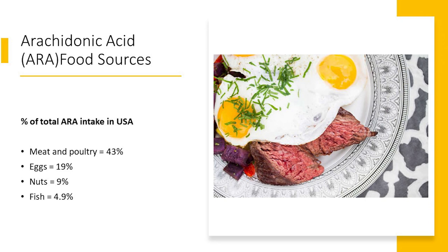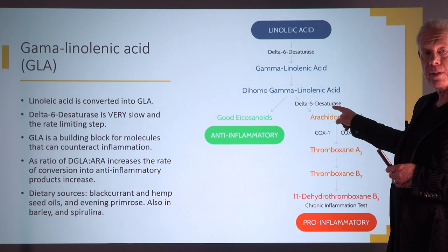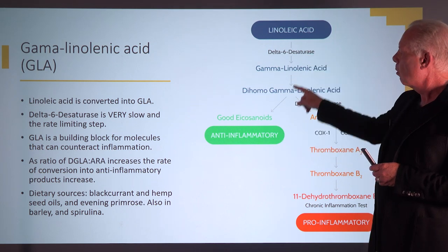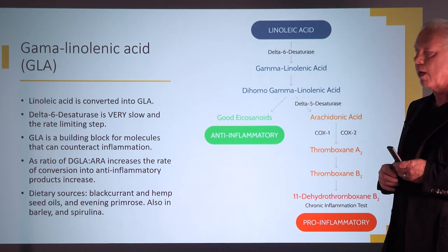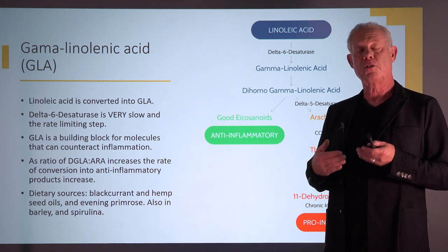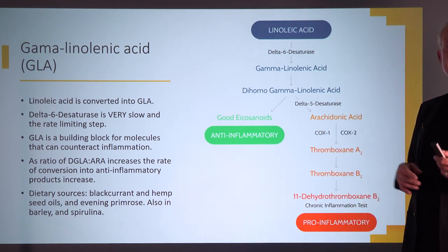Arachidonic acid food sources are mainly from the diet and mainly from animals. In America, meat and poultry is about 43 percent of arachidonic acid intake, eggs represent about 19 percent, with nuts, fish, and other sources making up the rest. Gamma-linolenic acid (GLA) is also a delta-6 omega-6, but it doesn't have that rate-limiting step, so we make a little bit more of it. The end products from GLA are actually good for the body, whereas end products from arachidonic acid are not necessarily good.